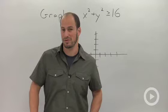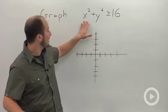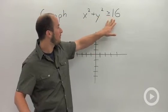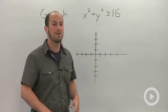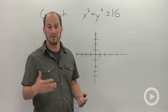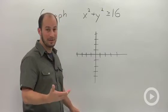So behind me I have a pretty straightforward example that we'll look at, and what we're looking at is x squared plus y squared is greater than or equal to 16. Hopefully you recognize that as an equation for a circle, radius 4, centered at the origin.